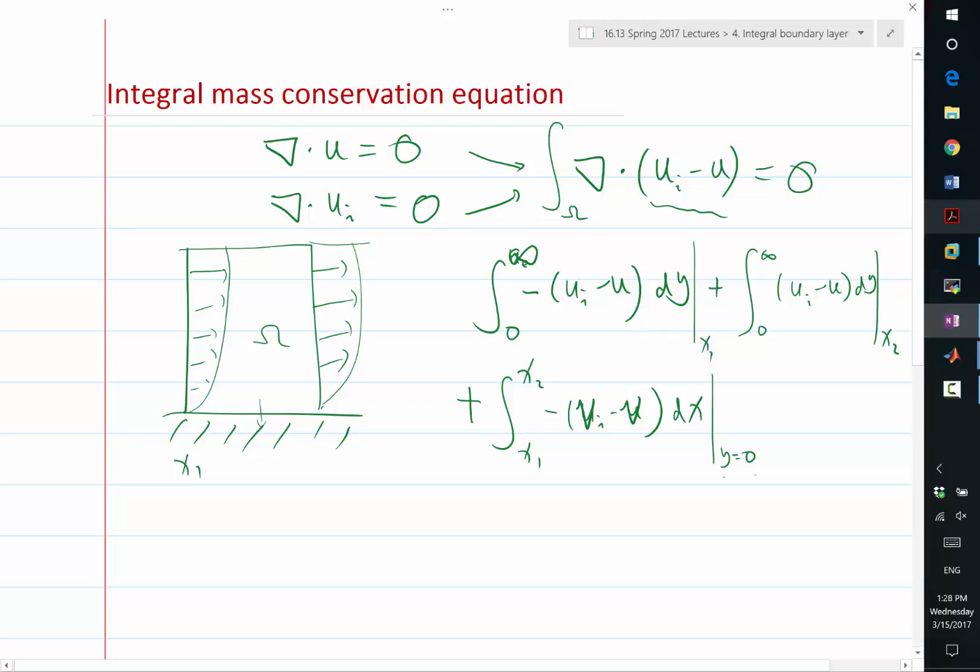And by the way, when y equal to zero, what is v? It's zero, so we can get rid of this at y equal to zero. And then plus integration from x1 to x2, positive of vi minus v dx at y equal to infinity, which is very large.